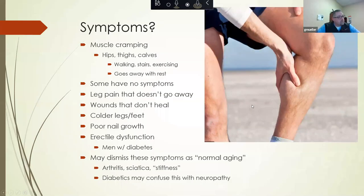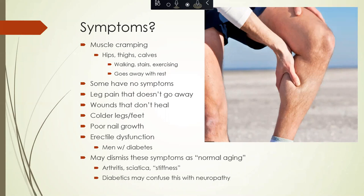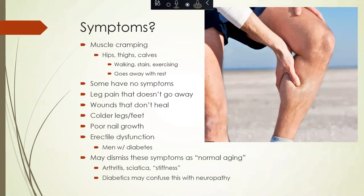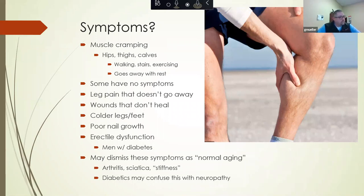What are some of the symptoms you may be experiencing as a manifestation of peripheral arterial disease? Muscle cramping, namely in your hips, thighs, and calves. This tends to come on with exertion such as walking, stairs, or exercising, and tends to go away with rest. With continued activity, these symptoms return. Some patients have no symptoms at all.